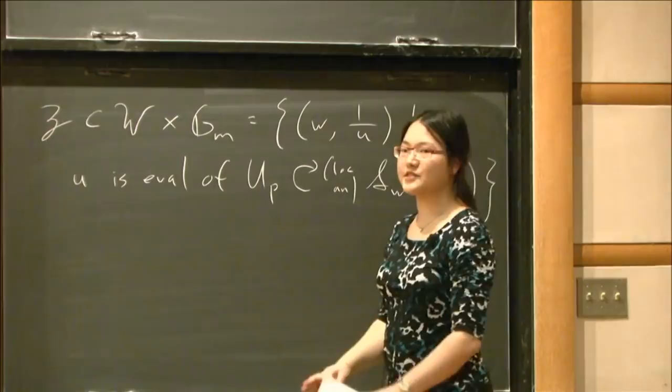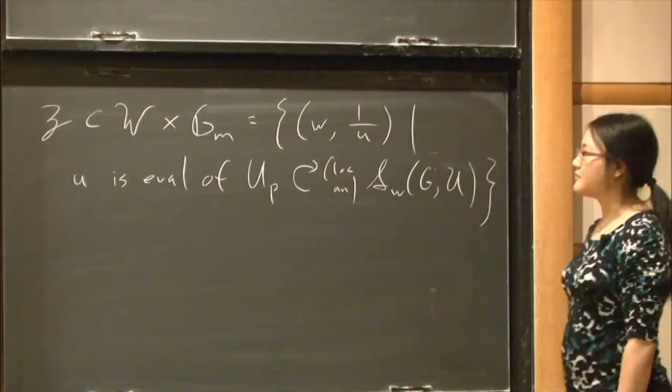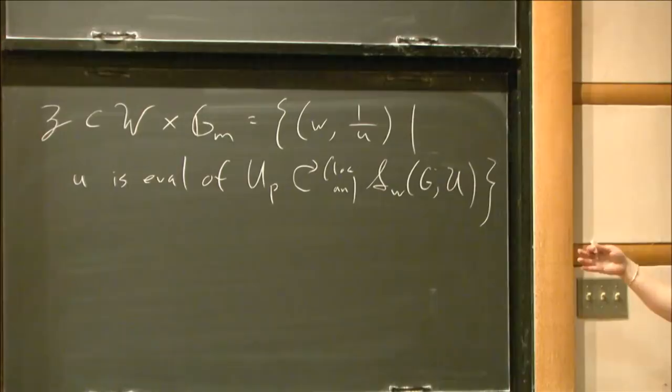This eigenvariety specifically keeps track of U_p eigenvalues. If you want to keep track of entire systems of Hecke eigenvalues with other Hecke operators, you can take a cover of Z that will keep track of those systems of eigenvalues. However, it will be the same as Z at most points, and the differences won't really affect what we're about to discuss.